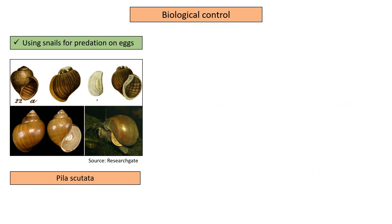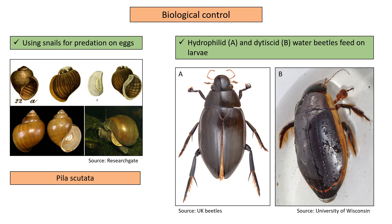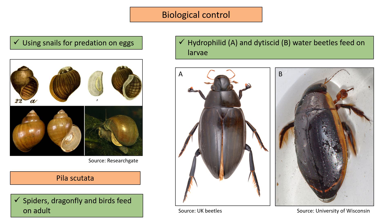It can also be biologically controlled by using snails for predation on eggs, hydrophilid and dytiscid water beetles feed on larvae, spiders, dragonfly, and birds feed on adults.